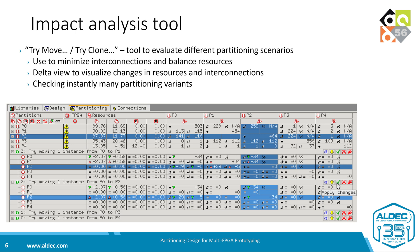In order to improve the results, you need strong visualization tools that show you what happens if you move one block of the design to one or another partition. For that we provide an impact analysis tool that enables you to quickly see what happens if you change something in the partitioning. The delta view shown here in this screenshot quickly indicates good and bad partitioning decisions — good decisions minimize the number of interconnects between partitions and make the proper balance of FPGA resources.